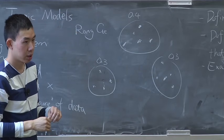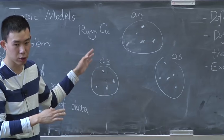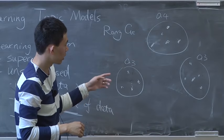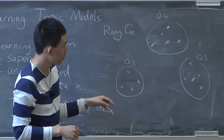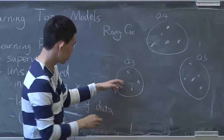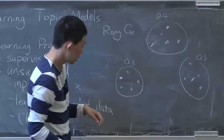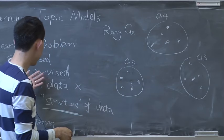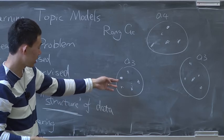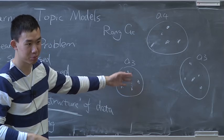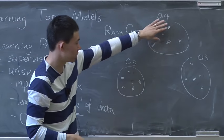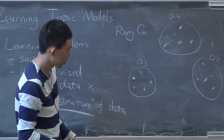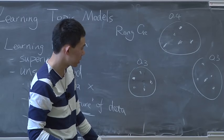If I know all the parameters of the model, to generate a data point I first choose which Gaussian the data point comes from, then sample a point according to that Gaussian. But what's important is once I have this data point and give it as input to an unsupervised learning algorithm, the algorithm does not know which Gaussian it was generated from. It only sees all the points and has to figure out which Gaussian each came from — that's the hardness of this kind of problem.